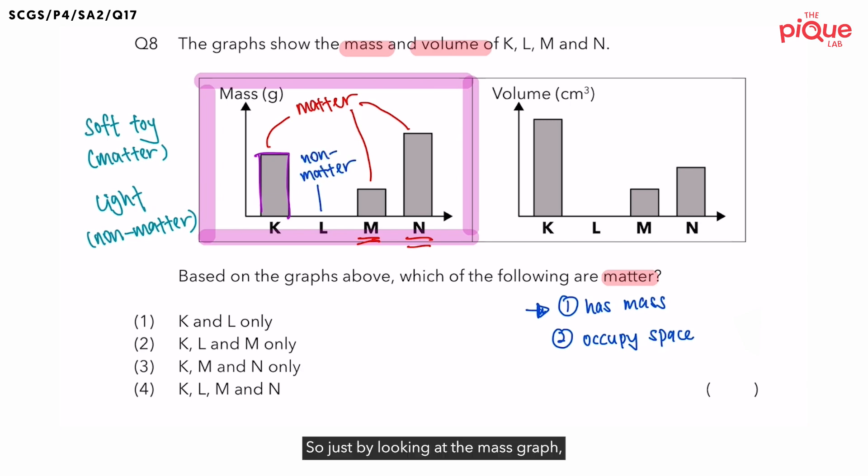So just by looking at the mass graph, we already know that K, M and N, they are matter. So why does the question still show us a graph of volume? Now this is due to the second property of matter.